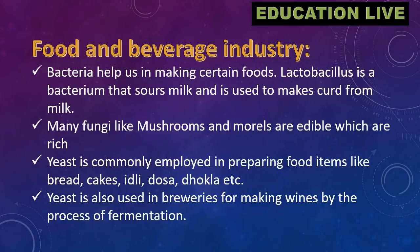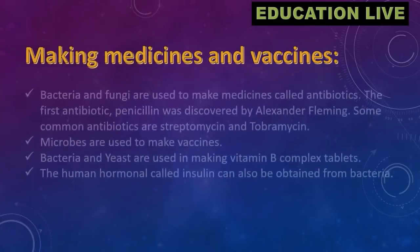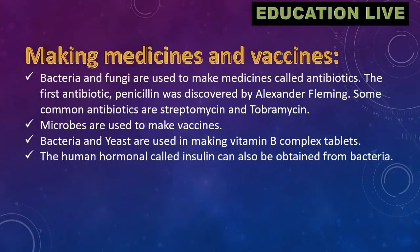Yeast is also used in breweries for making wines by the process of fermentation. Bacteria and fungi are used to make medicines called antibiotics. The first antibiotic, penicillin, was discovered by Alexander Fleming. Some common antibiotics are streptomycin and tobramycin. Microbes are used to make vaccines, and bacteria and yeast are used in making vitamin B complex tablets. The human hormone insulin can also be obtained from bacteria.